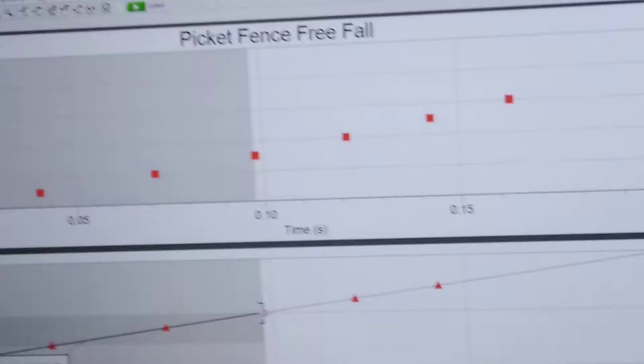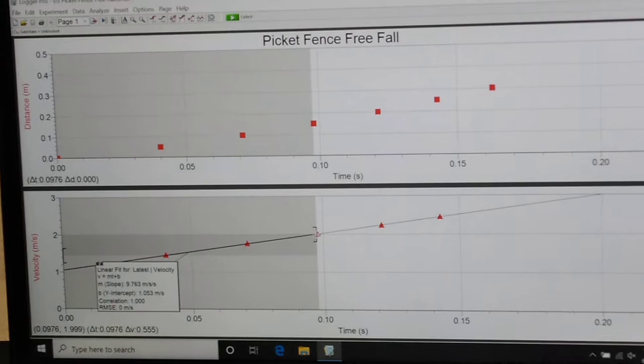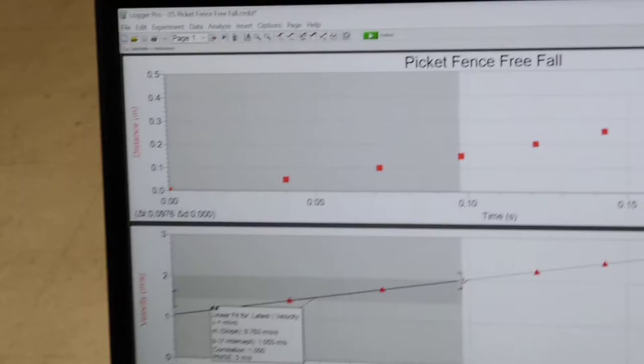We'll highlight the area. All those red triangles represent the data points of the picket fence passing through the photogate. We'll go into Linear Fit under Analyze, and Linear Fit comes up with the slope of 9.763 meters per second squared.